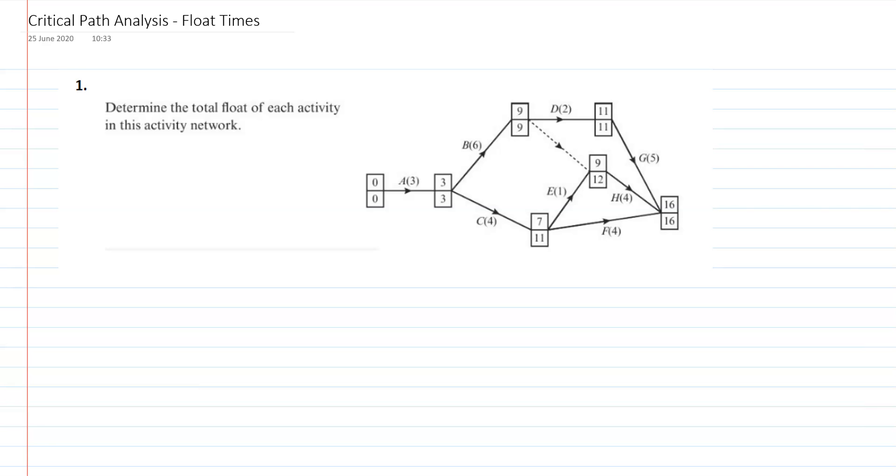So in order to work out our floats, our float is the late finish time of the activity, so the bottom number after it. So for A, for example, here's my late finish time. For B, here's my late finish time. For D, here's my late finish time, etc., minus the duration of the activity. Remember, the durations are the numbers next to them, minus the early start time for that activity. So that's how we calculate the float. The early start times, remember, they're the top numbers. These are the early start times.